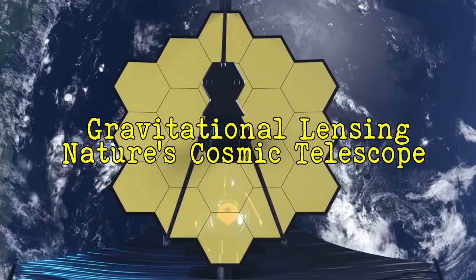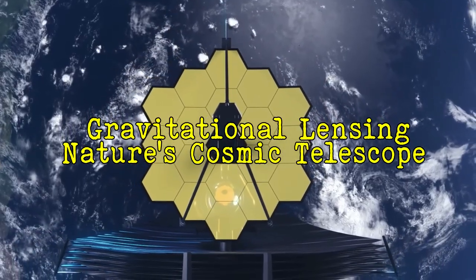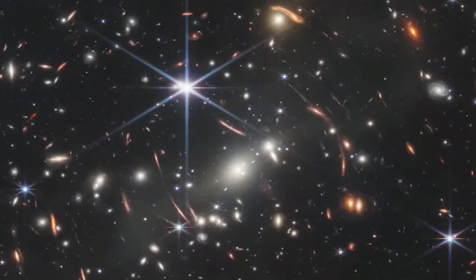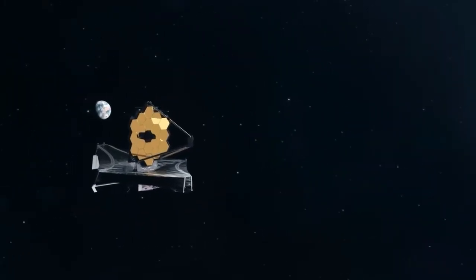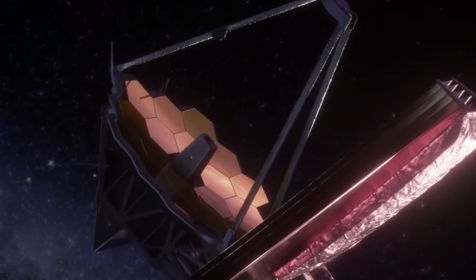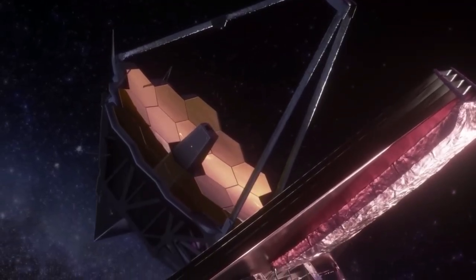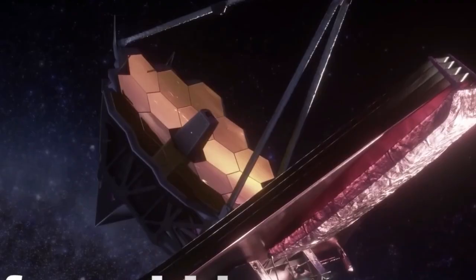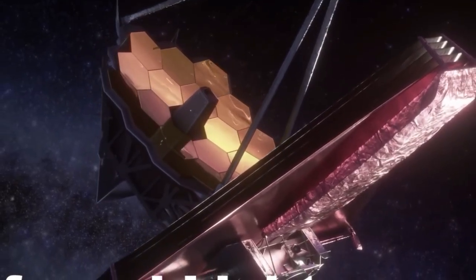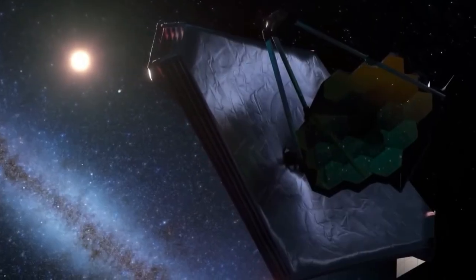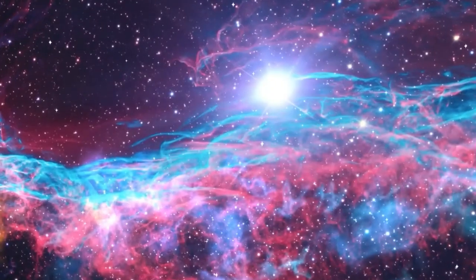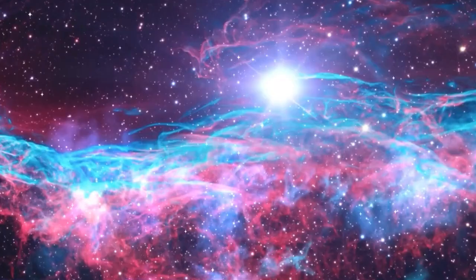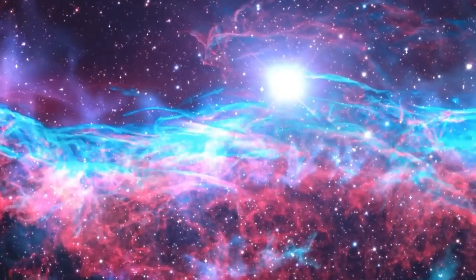Einstein's theory of general relativity revolutionized our understanding of gravity. Instead of viewing gravity as a force that pulls objects together, Einstein proposed something more profound: massive objects curve the fabric of space-time itself. This curvature causes light to follow bent paths as it travels through the universe, much like how a marble rolls along the curved surface of a trampoline with a bowling ball placed in its center.